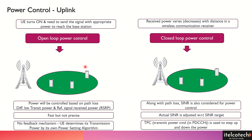Whenever user equipment is talking to the base station in the uplink, there could be different scenarios. The scenario we are picking up for open loop power control is when the UE is switched on for the first time and it needs to send the signal with the appropriate power so as to reach the base station. It is possible that the power coming from the base station to the user is good enough, but in the uplink it is not good enough to reach the base station. Normally, whenever the UE is powered on, it sends a reference signal which has a fixed power associated with it in the downlink.